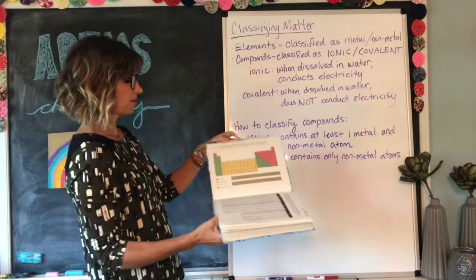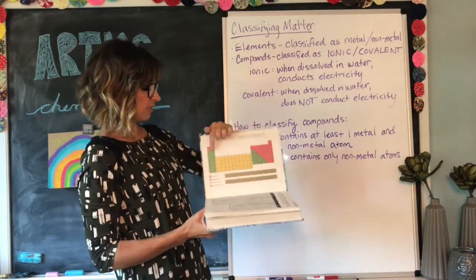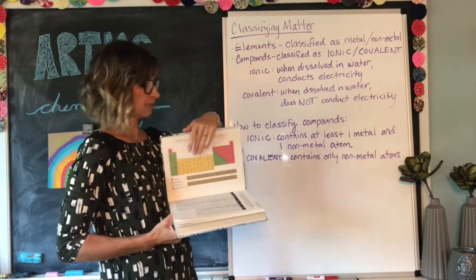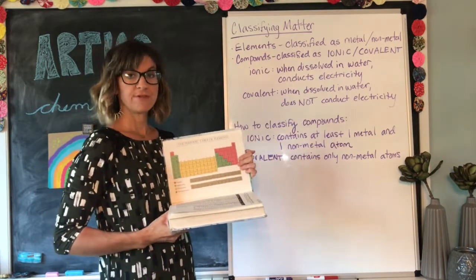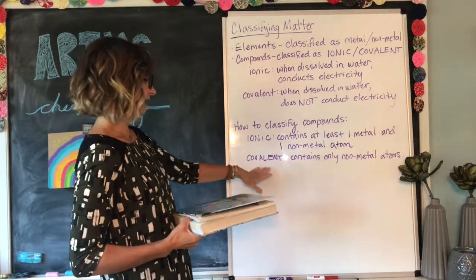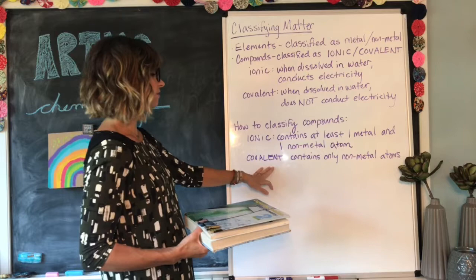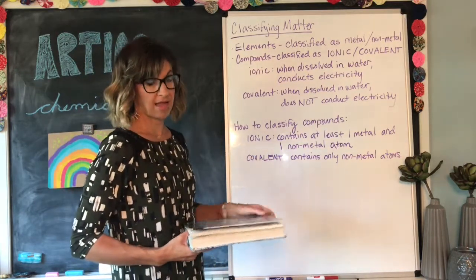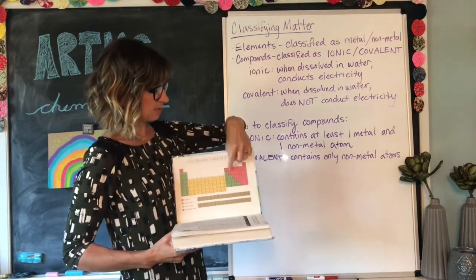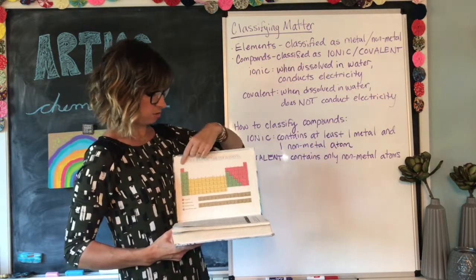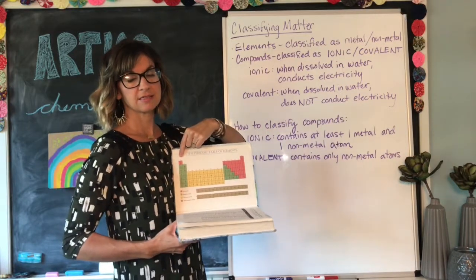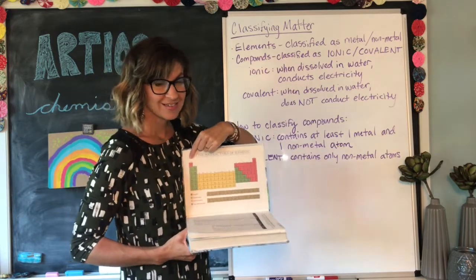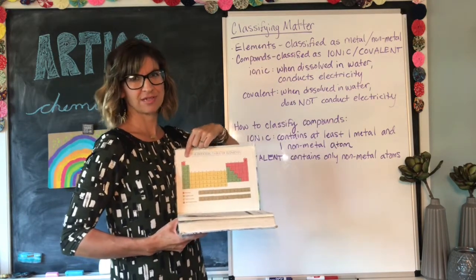So for an ionic compound, you'd have to find which atoms are present in the molecule, find them on the periodic table, and locate whether they are to the left or the right of the jagged line. If you have one of each, it's ionic. And for a covalent compound, it only contains non-metal atoms — you would find all of the atoms in the red section, or hydrogen. Remember, hydrogen is an exception: even though it's over on the left, it's colored red, so you know it's a non-metal.